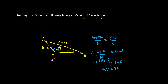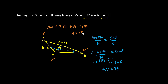We now have two angles — we have C and we have B — and now let's figure out A. We know that the three angles add up to 180, so 140 plus B, which is around 7.39, plus A equals 180. Using your calculator, we have A equals 180 minus 140 minus 7.39, which is approximately 32.6 degrees.